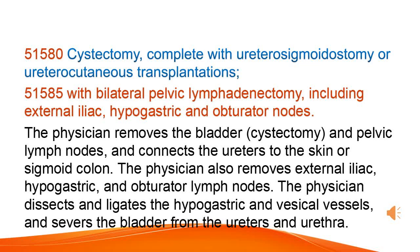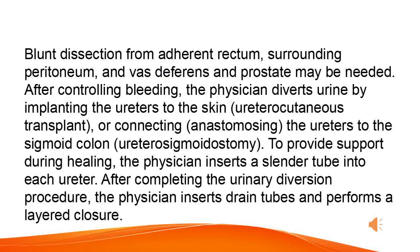The physician also removes external iliac, hypogastric, and obturator lymph nodes. The physician dissects and ligates the hypogastric and vesicle vessels, and severs the bladder from the ureters and urethra. Blunt dissection from adherent rectum, surrounding peritoneum, and vas deferens and prostate may be needed. After controlling bleeding, the physician diverts urine by implanting the ureters to the skin (ureterocutaneous transplant) or connecting, anastomosing, the ureters to the sigmoid colon (ureterosigmoidostomy).